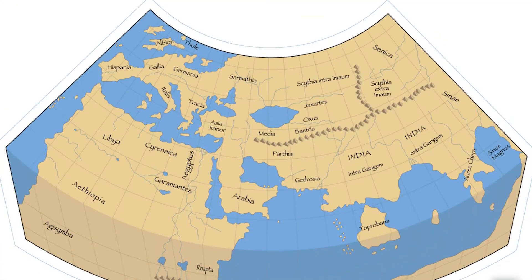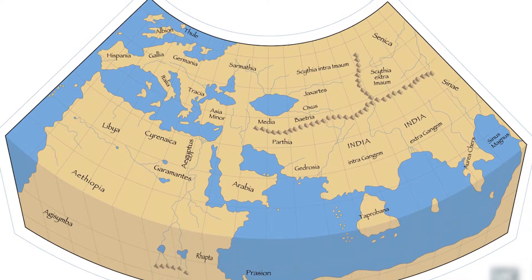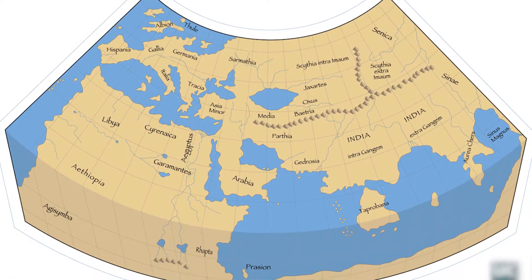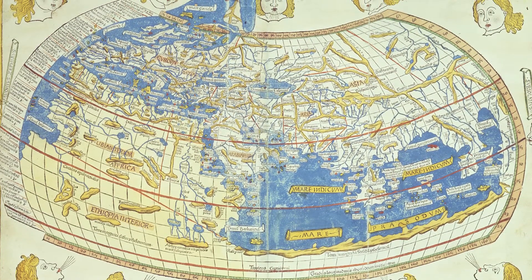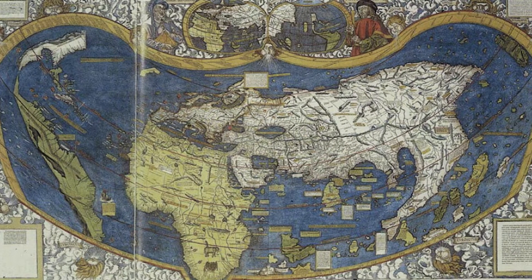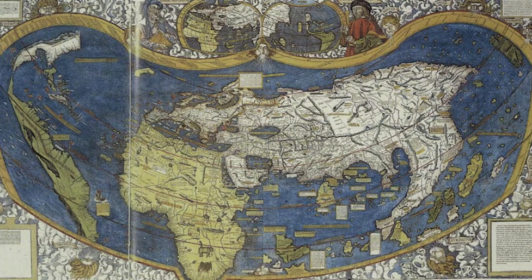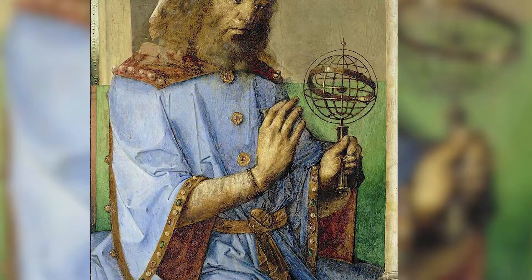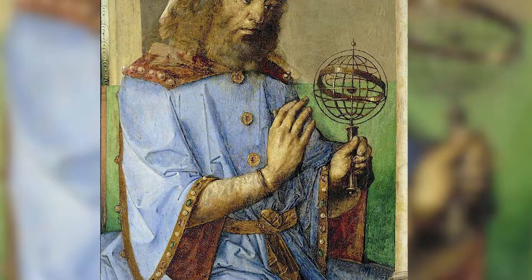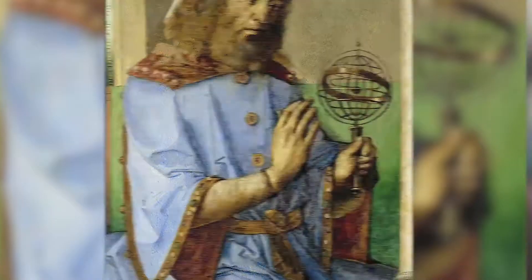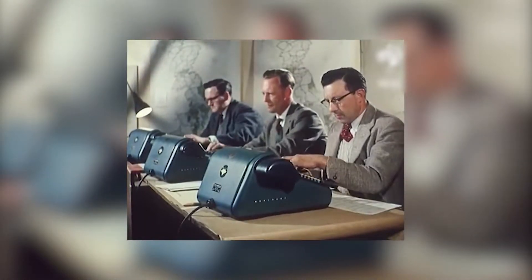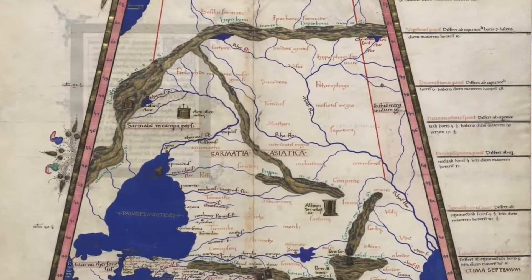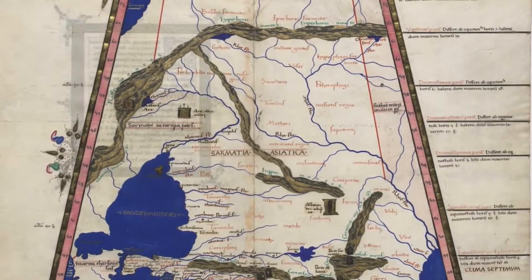Take a look at this map — it's Ptolemy's Map of the Known World, based on his work The Geography from the second century. Obviously it's not flawless; to our current eyes it almost appears like an amateur drawing. But you can see that people recognized roughly how the coastlines of the areas surrounding them were shaped.